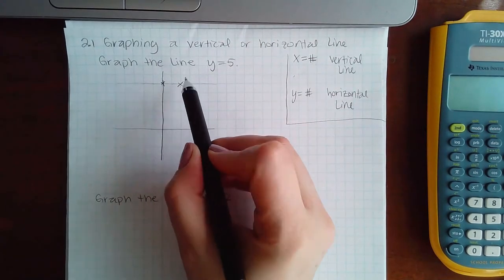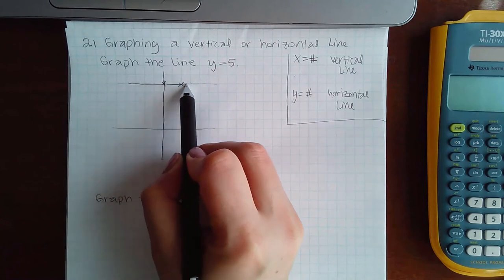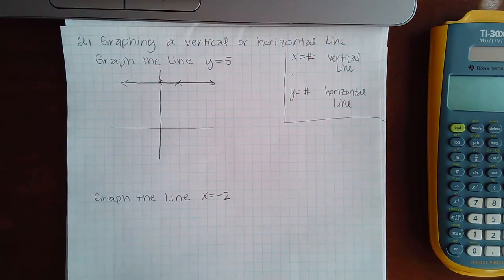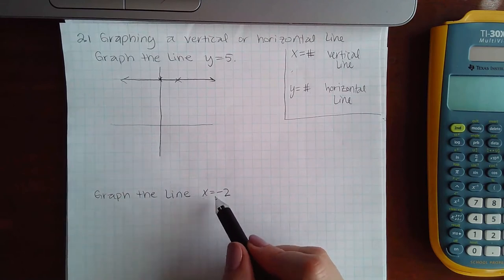Then Alex will automatically draw that horizontal line at five. Similarly, for if it were x equal to a number.